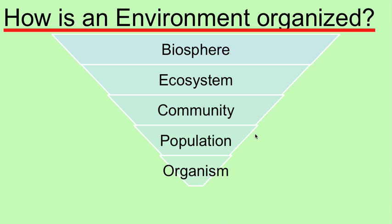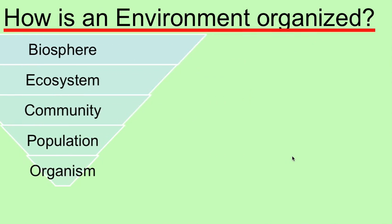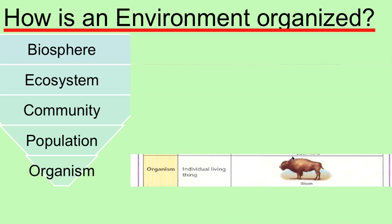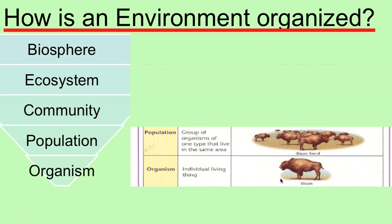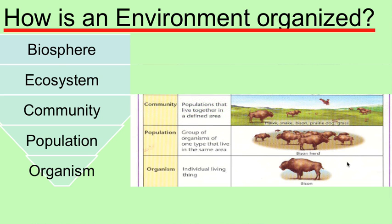Let's talk about how we organize our environment, because that's the first thing an ecologist is going to learn. Think of it as an upside-down pyramid. At the bottom is our smallest group — that's an individual organism, like an individual bison. That individual is part of a population, a larger group of bison living in the same area. That population interacts with other populations of different organisms, and since they live in the same area and interact together, we call that a community. On human terms, you are part of a family, and your family is part of a neighborhood or community.